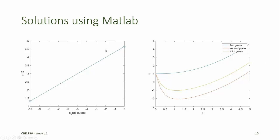This linear interpolation method works exactly in this case because we were solving a linear ODE. The solution at all points in the domain, including at the right-hand boundary, is a linear function of our initial guess for the slope at the left-hand end. So we can linearly interpolate to find what that slope should be from any two initial guesses.